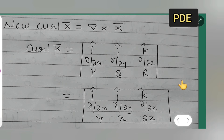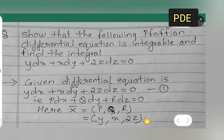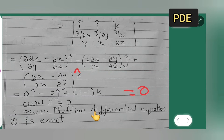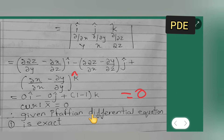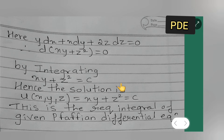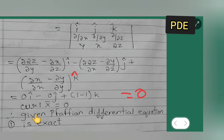Since curl of X-bar equals zero, the given Pfaffian differential equation 1 is exact. We can now confirm that the given Pfaffian differential equation is exact and proceed to find its solution.